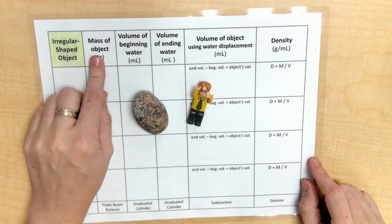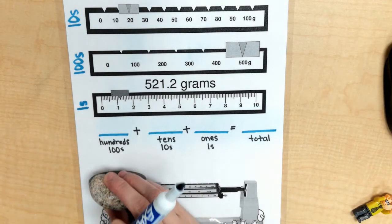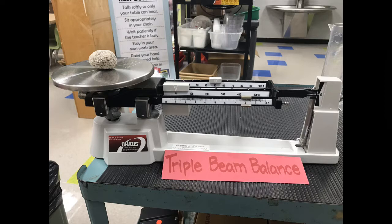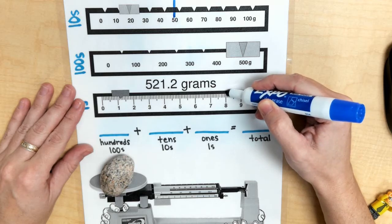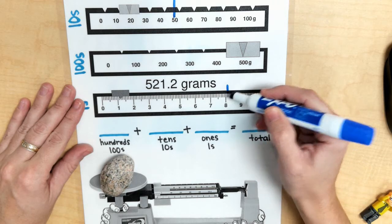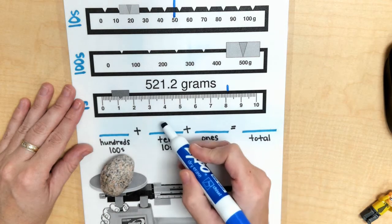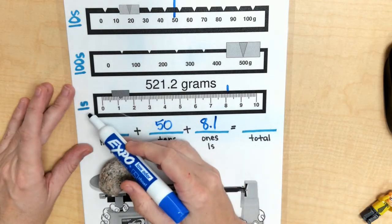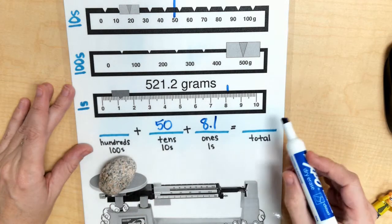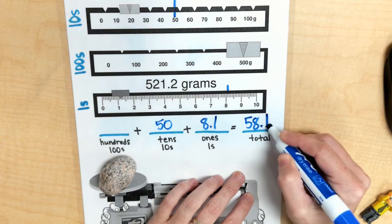So we're going to be figuring out the mass and the volume in order to figure out the density. With my rock, when I placed it on the triple beam balance, it went all the way to the 50 and then it went all the way to the 8 and then it went a little bit more. It went to the .1 spot after 8. So there were no hundreds, there were 50 tens, and there was 8.1 on my ones right here. So my total in grams for the mass of my rock was 58.1 grams.